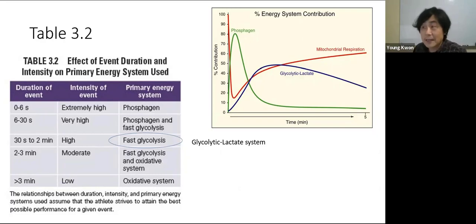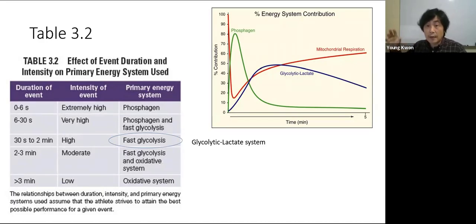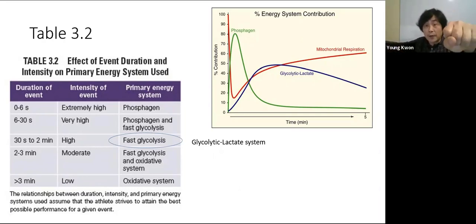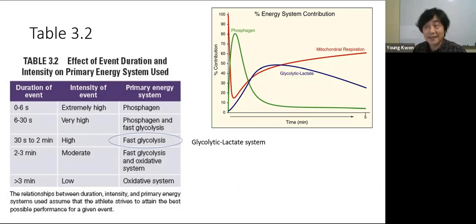Looking at the duration-intensity table: zero to six seconds of exercise at near-maximum intensity uses the phosphagen system — examples include a 1RM bench press, power lifting, or a snatch. From six to thirty seconds, both phosphagen and fast glycolysis are involved — like a Wingate test. The Wingate test is around 30 seconds, which focuses primarily on the phosphagen and fast glycolytic energy systems.